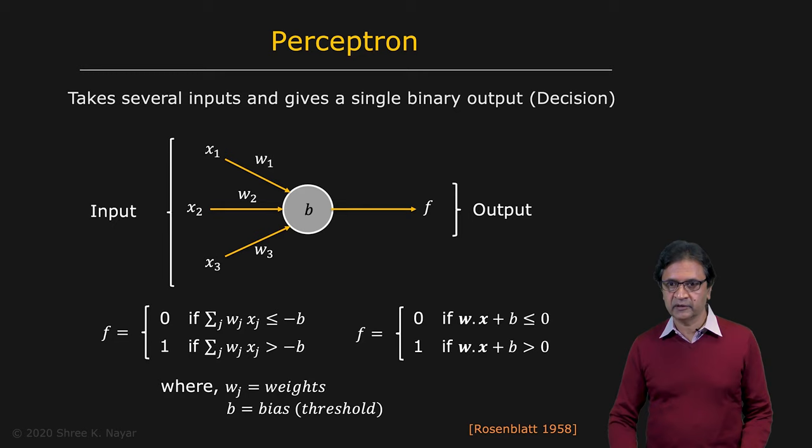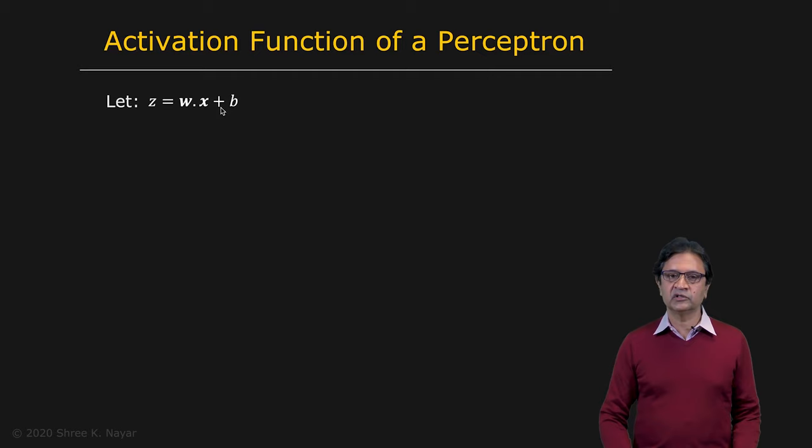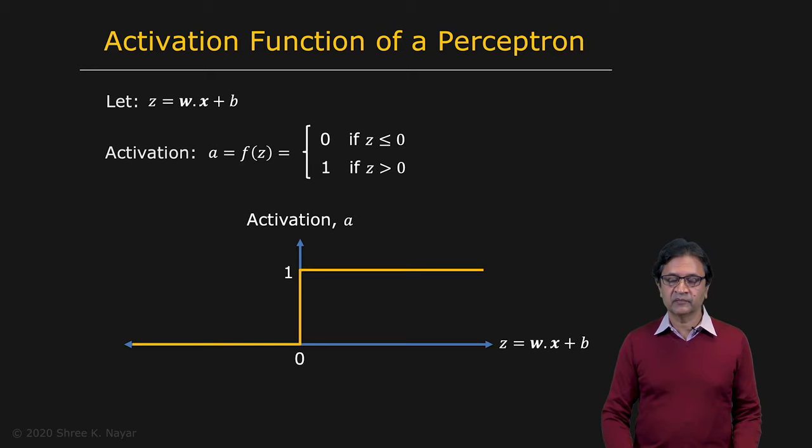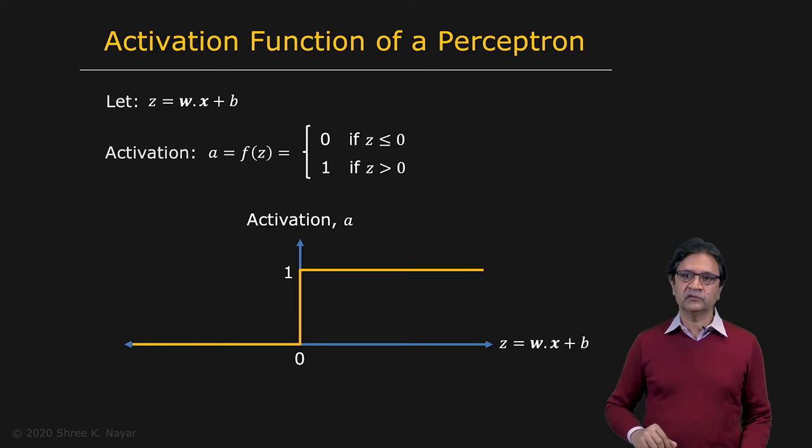Now let's take a closer look at this term right here, WX plus B. We'll call that Z. So really what the perceptron is doing is applying a function to Z. As the inputs come in, you get a value for Z and then you're going to apply a function to Z. In the case of the perceptron, the function is very simple. If Z is less or equal to zero, the output is zero. If Z is greater than zero, the output is one. So what is the function F then? That function is a step function or the heaviside function. In other words, the activation function of a perceptron is the step function.